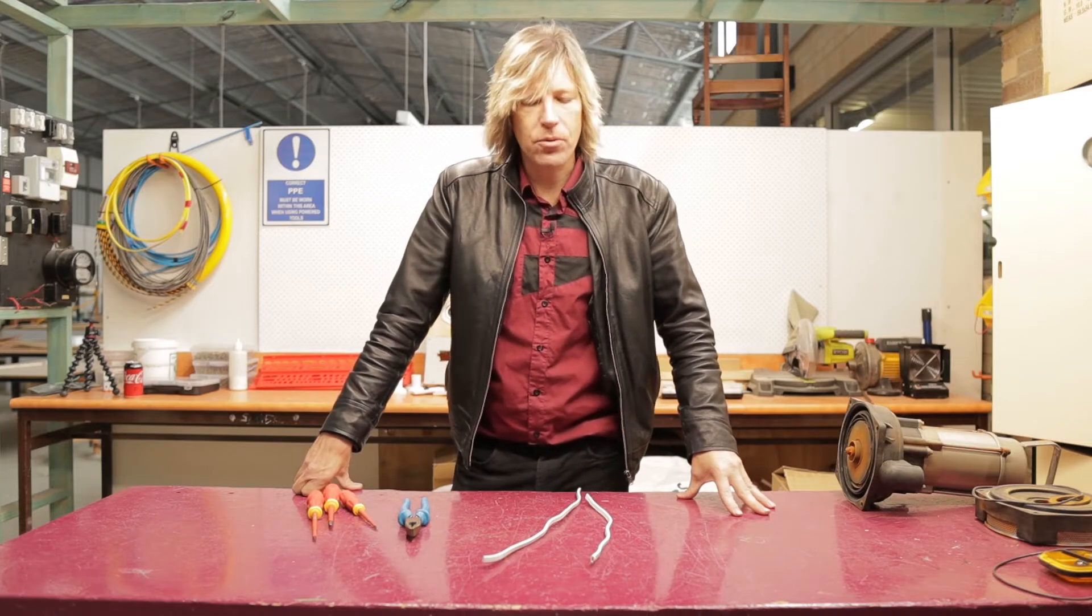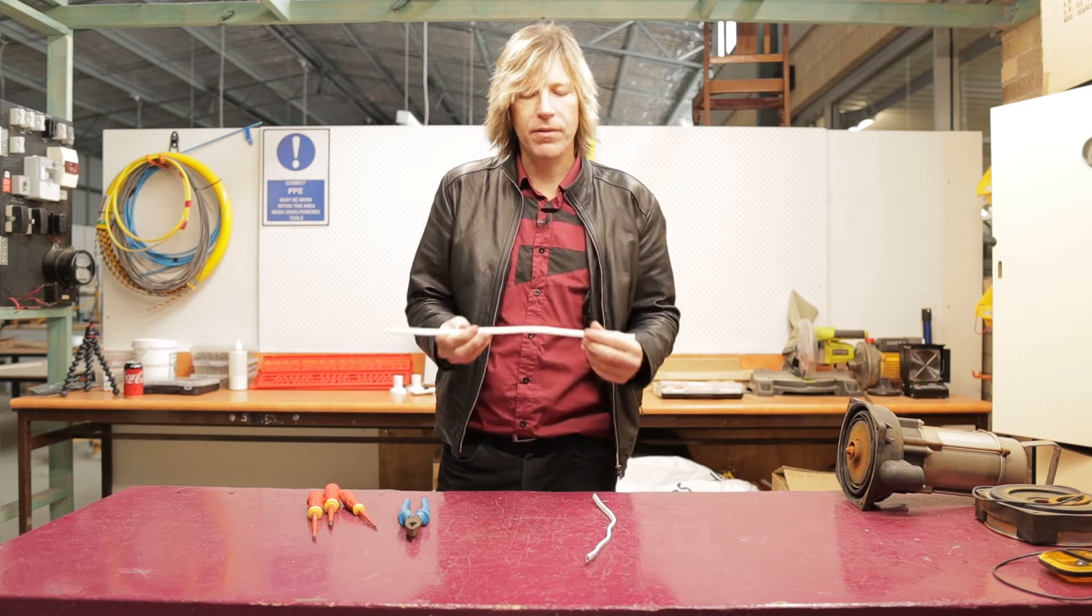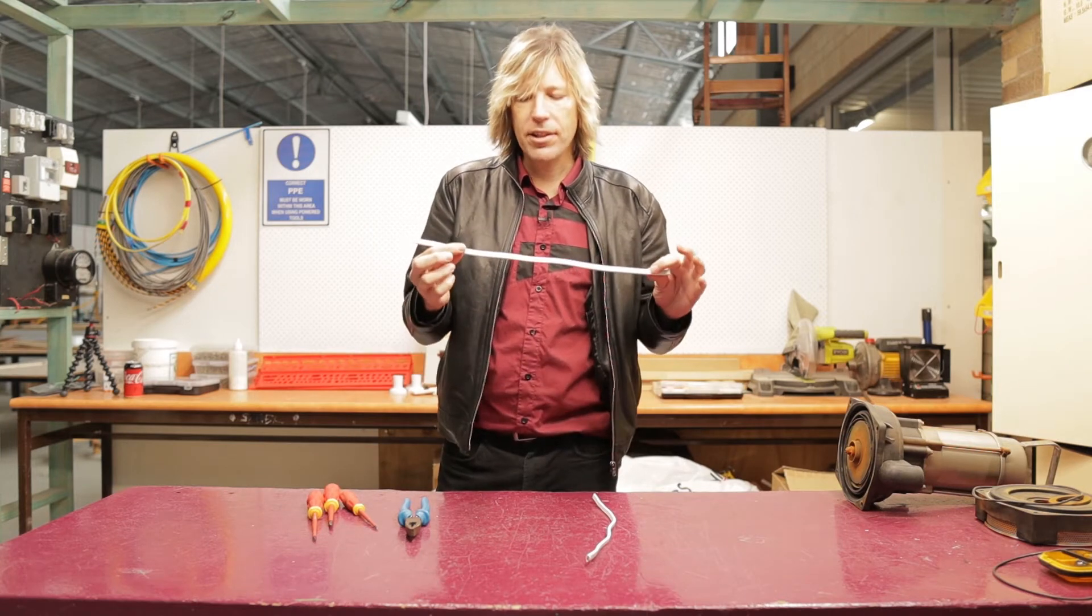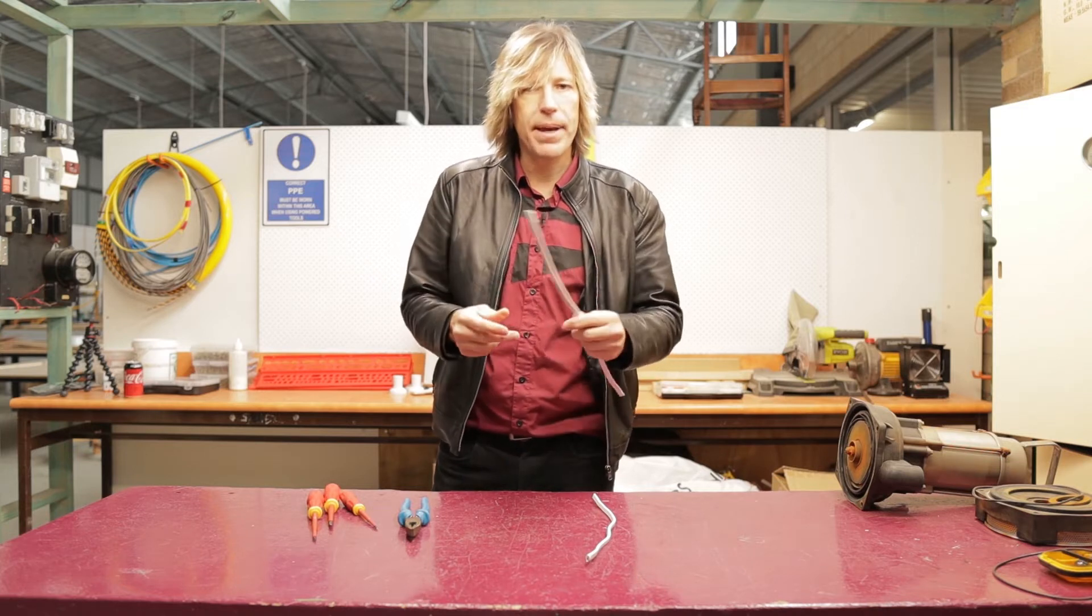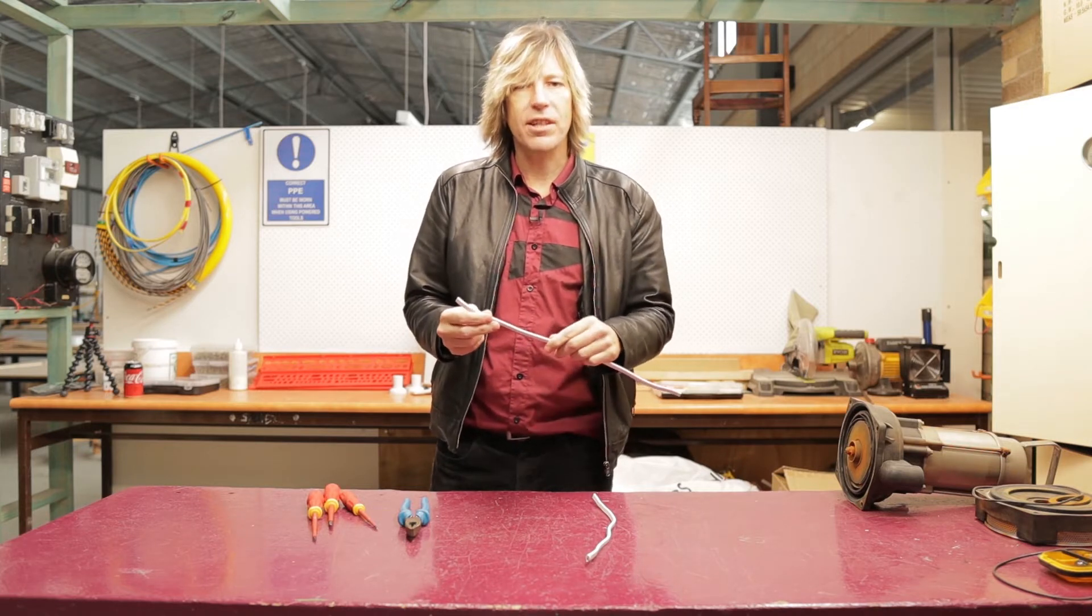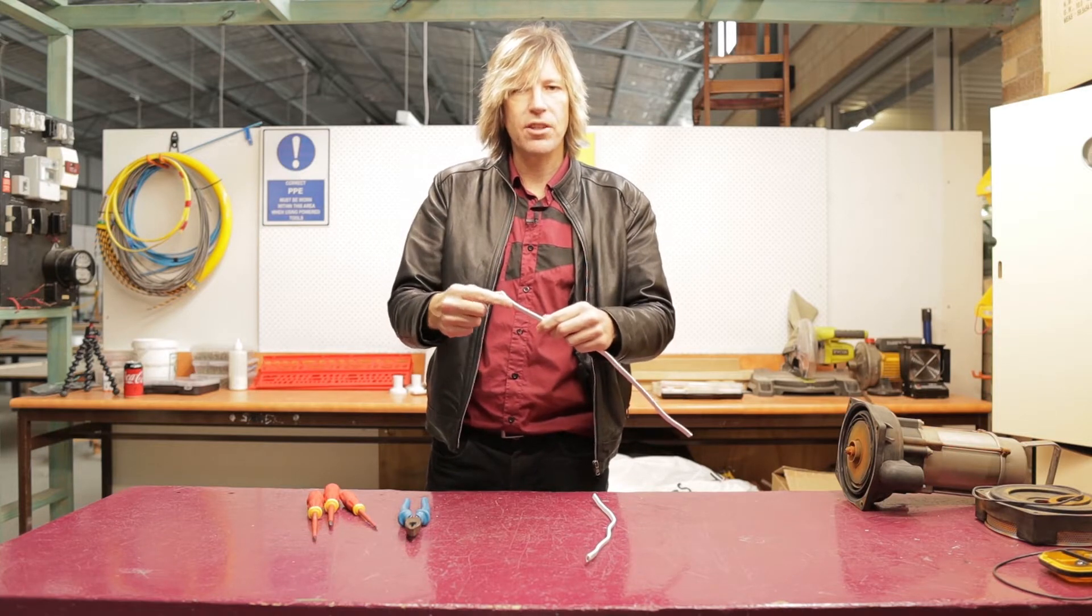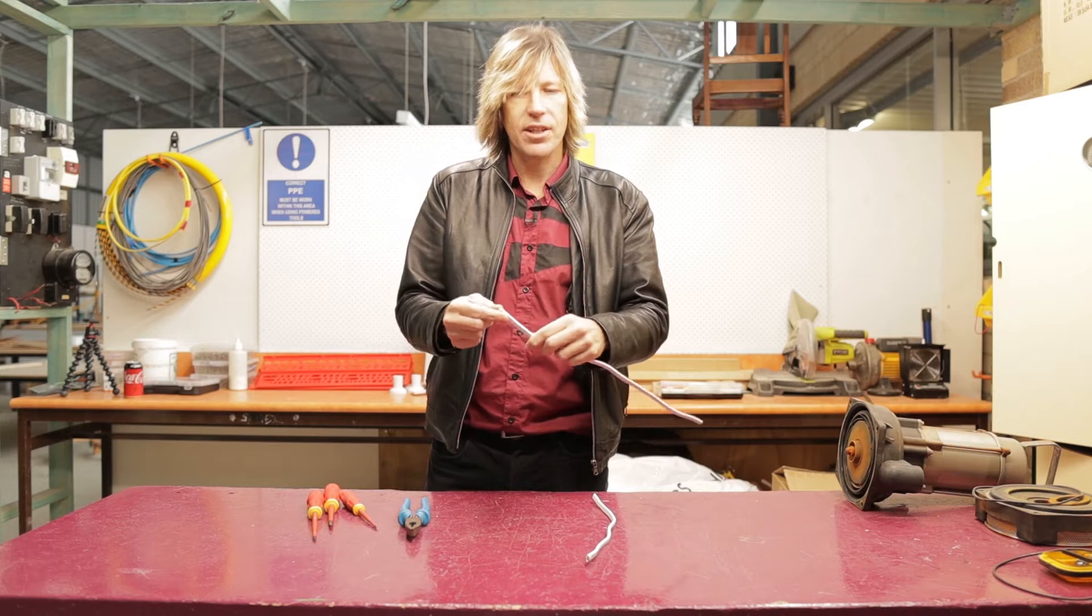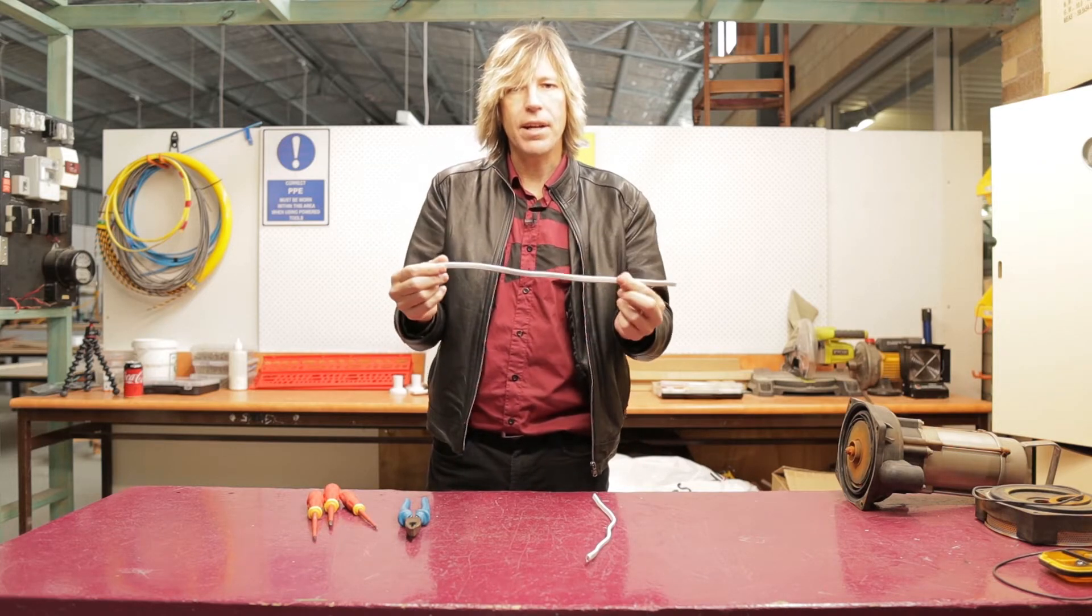In electrical we basically have a whole bunch of different types of cable that we need to use. This cable I have here with me is probably the most common that you'll come across. This is called TPS cable, thermoplastic sheath. It is double insulated which means it has an outer insulation layer and an inner insulation layer. Today I'm going to show you how to strip this cable and get it ready for termination.